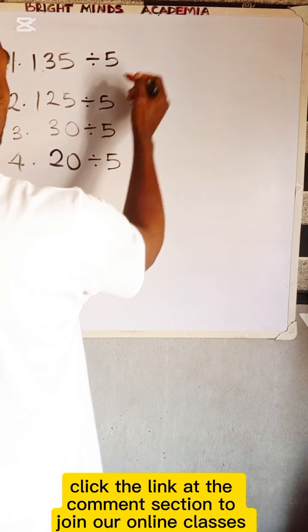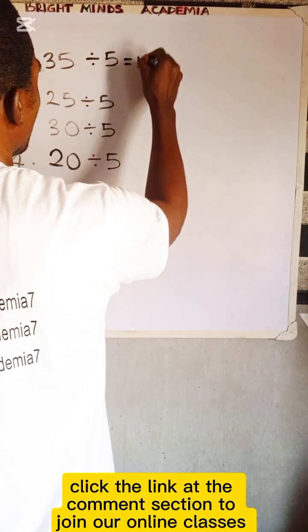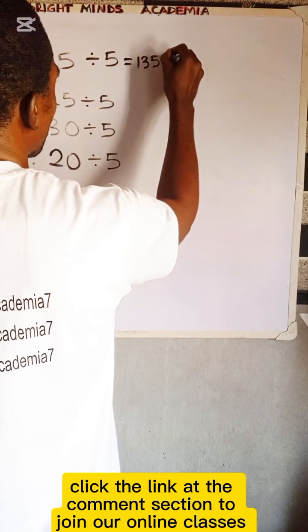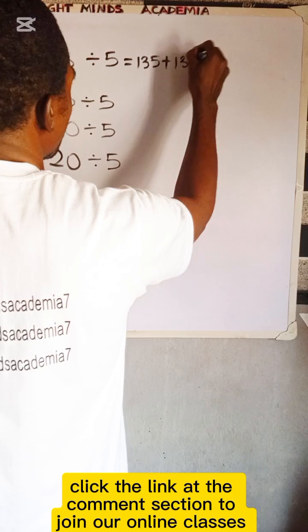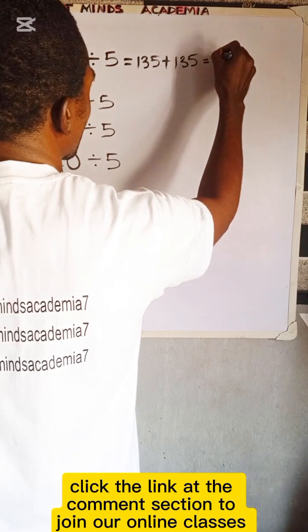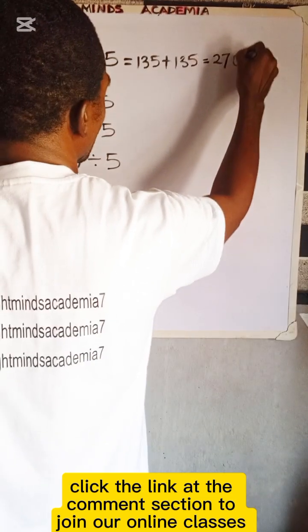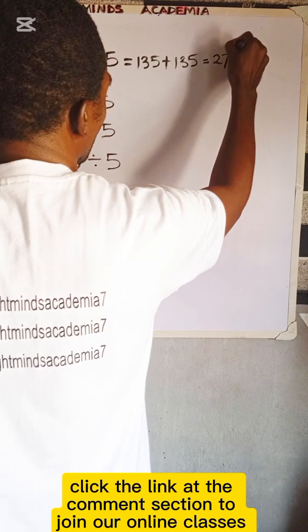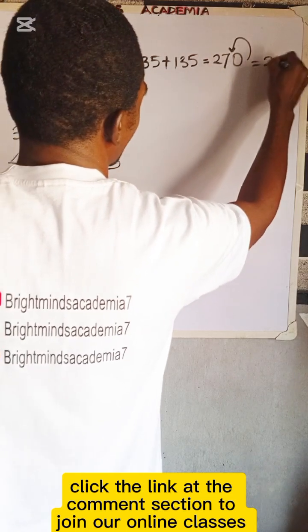135 divided by 5 is equal to 135 plus 135, which gives us 270. Now moving the decimal point to the left once gives you 27.